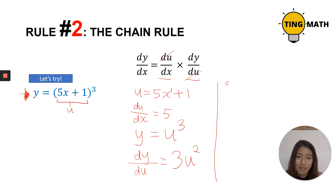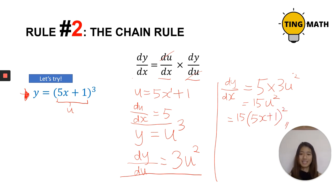We're not done yet. We are supposed to find dy over dx. So now we simply have to multiply the two differentials that we found. We're going to take 5 multiplied by 3u squared. This gives us 15u squared. And we can't leave it in terms of u, so let's substitute it back in. u equals 5x plus 1. Substitute that back in. And voila, we have our answer. dy over dx equals 15 multiplied by 5x plus 1 squared.